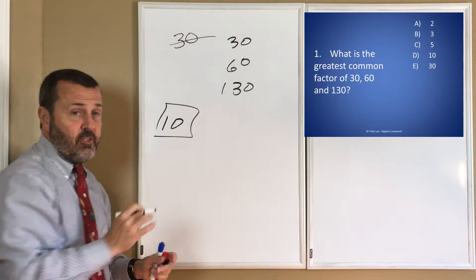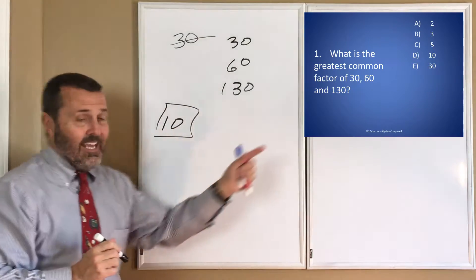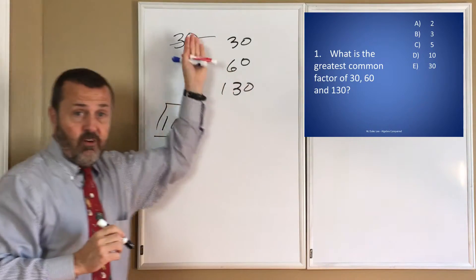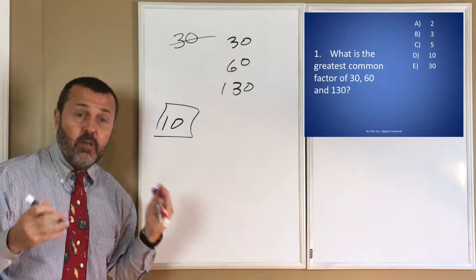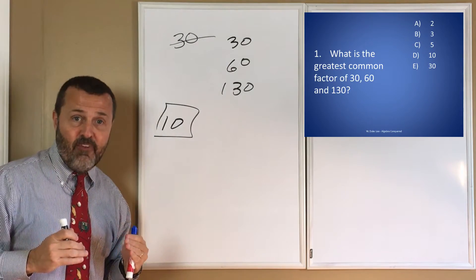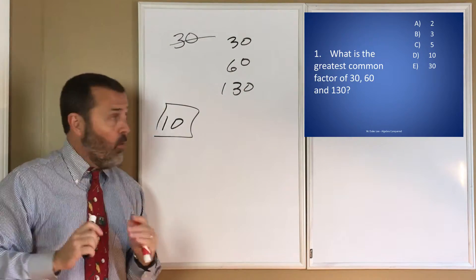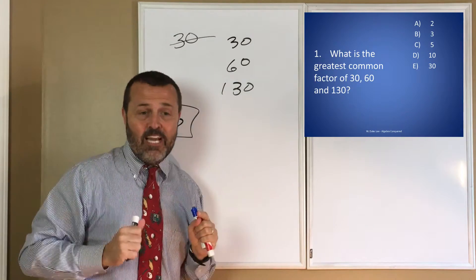So 10 has to be the answer. Well, wait a minute. Is 5 a factor of all of them? Yes, but it's not the greatest common factor of all of them. Therefore, choice D is our answer.